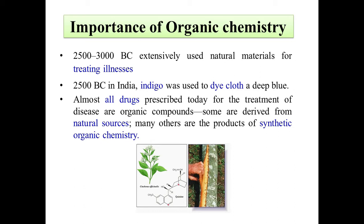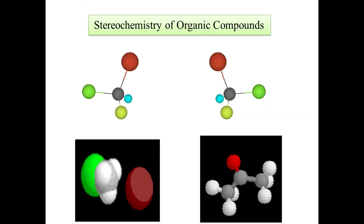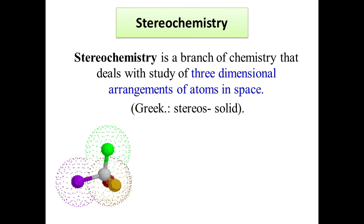Now let's go to our topic: stereochemistry of organic compounds. What is stereochemistry? Stereochemistry is the branch of chemistry that deals with the study of the three-dimensional arrangement of atoms in space. The Greek word 'stereos' means solid. If you see a molecule rotating in front of your eyes in three-dimensional space, that is stereochemistry.